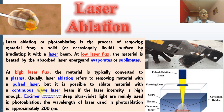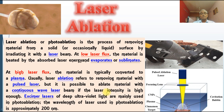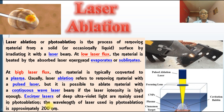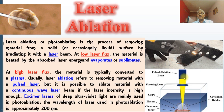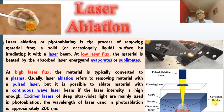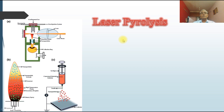Both continuous wave and pulsed lasers can be used for removing material. If laser intensity is high enough, excimer lasers of deep ultraviolet light are mainly used in photoablation. The wavelength of the laser used in photoablation is around 200 nanometers. In the diagram, the laser beam is allowed to fall on the target material, plasma is created, cavitation bubbles are formed, and material is removed. The focusing lens for the laser is also visible.